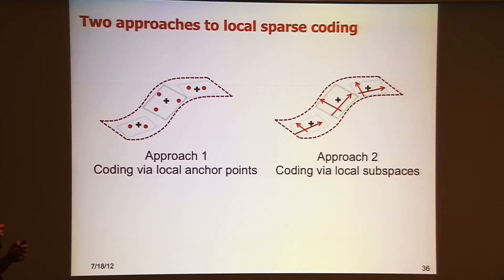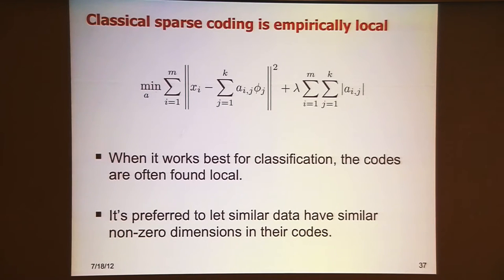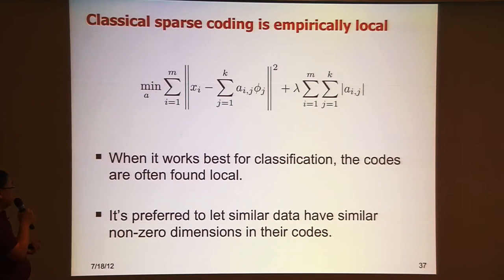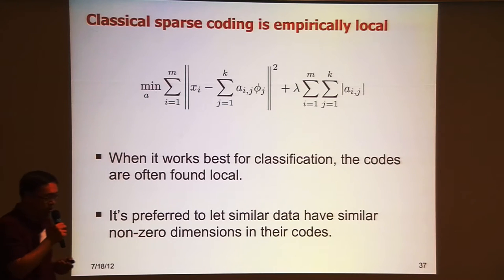We have some empirical observations. Even when you implement traditional classical sparse coding without any explicit locality constraint, we empirically observed there is some kind of locality in the result — especially when it works best for classification. The codes are often found to be local. It's preferred to let similar data have similar non-zero dimensions in their codes.